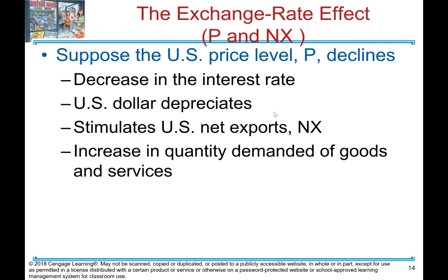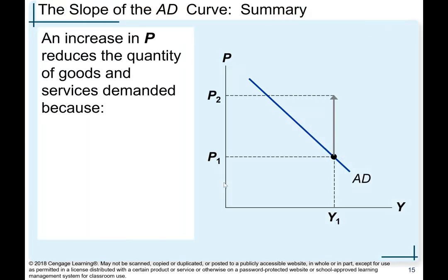The exchange rate effect — price and net exports: suppose the U.S. price level P declines. There is a decrease in the interest rate. The U.S. dollar depreciates. As we saw earlier, when the interest rate declines domestically, the dollar depreciates. This stimulates U.S. net exports — America can sell more, exports increase — and there is an increase in quantity demanded of goods and services. That summarizes the slope of the aggregate demand curve.